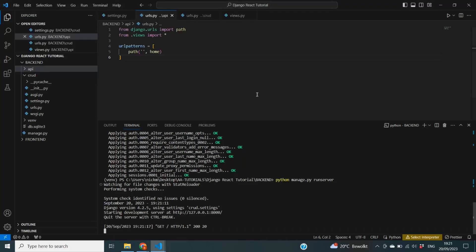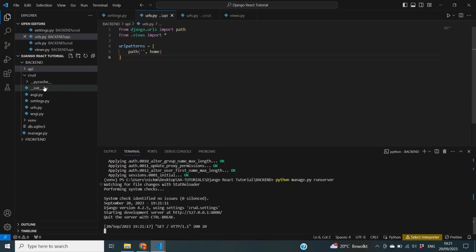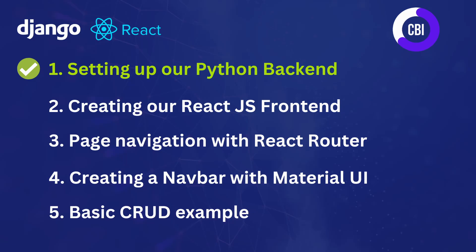That's all we need to do for the first part of this tutorial series. We've created our basic backend setup and initiated our database. In the next video we'll configure our React.js project inside the frontend folder and make sure the backend and frontend can communicate with each other. In the videos after that, I'll show you how to navigate between pages using React Router, create a navigation menu with Material UI, and demonstrate a basic CRUD example for creating, reading, updating and deleting records. Thank you very much for watching — I hope to see you in the next one. Please subscribe if you like the content!